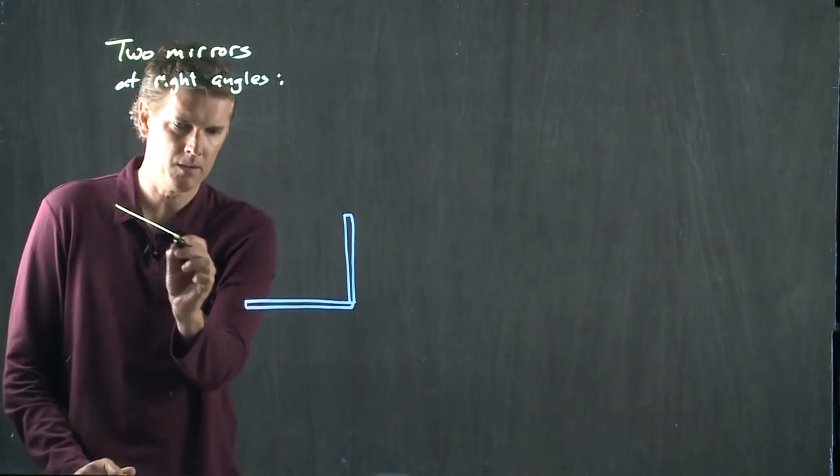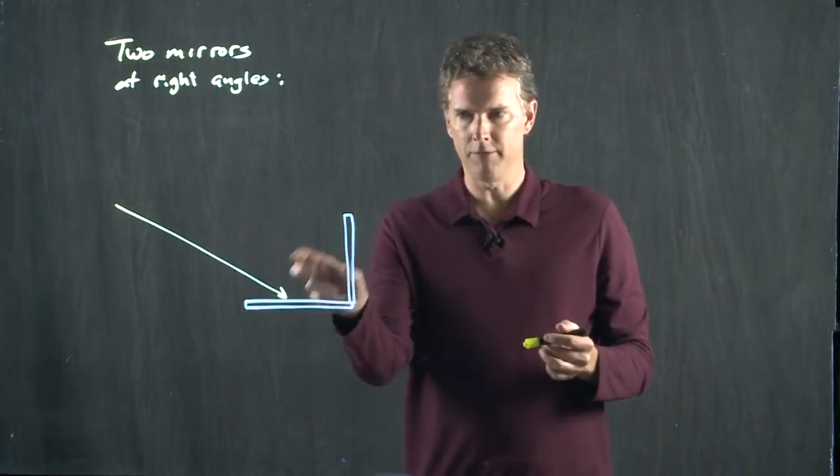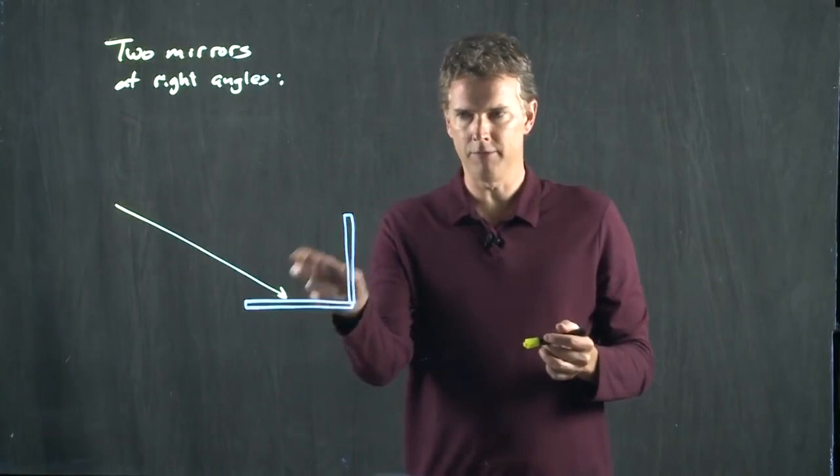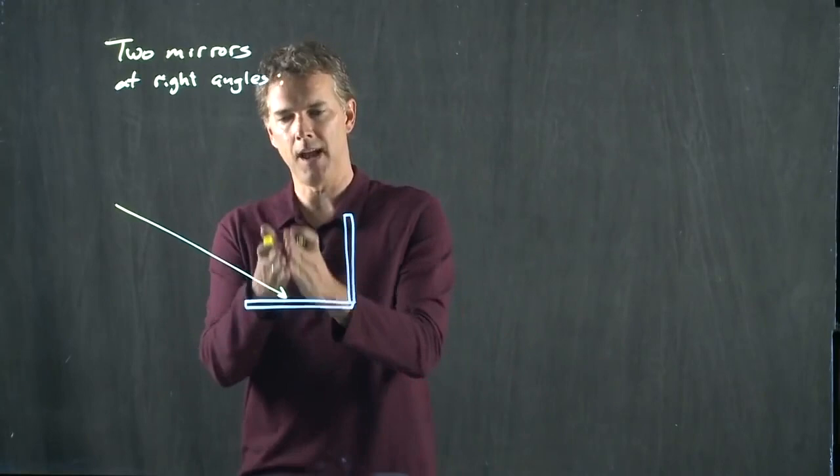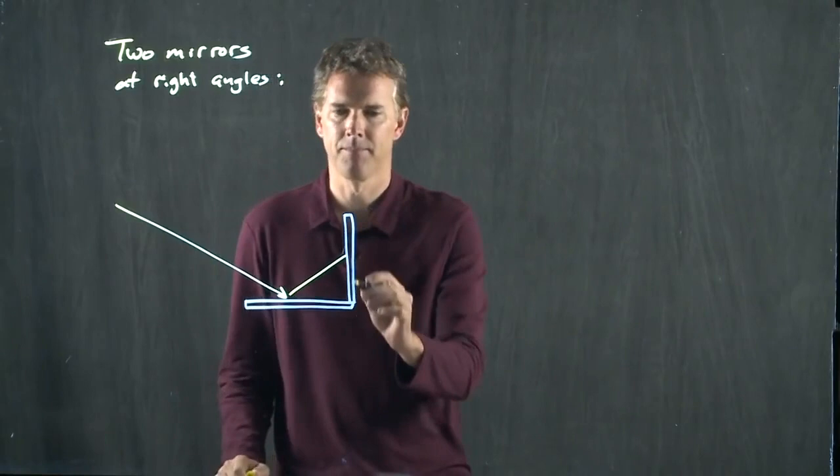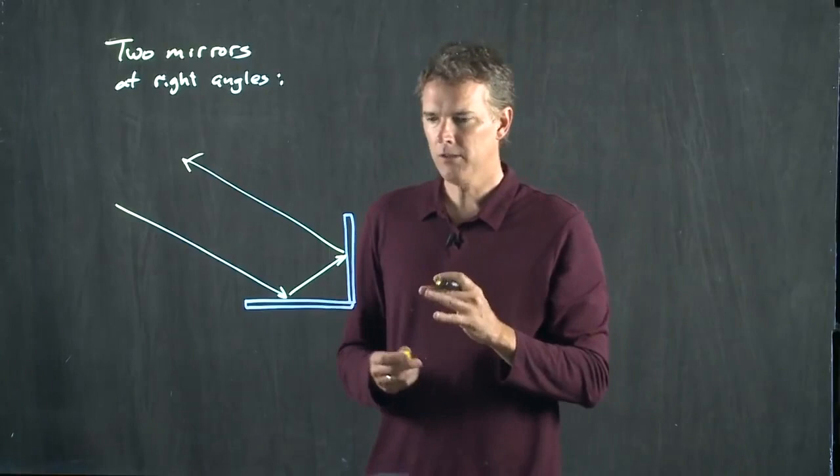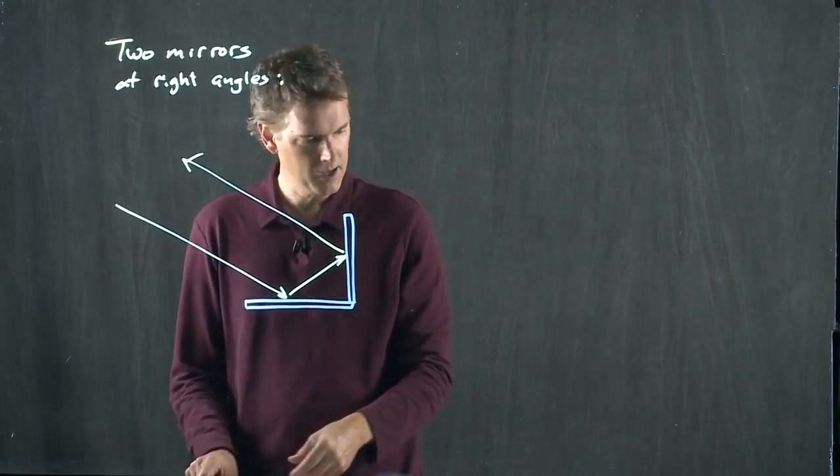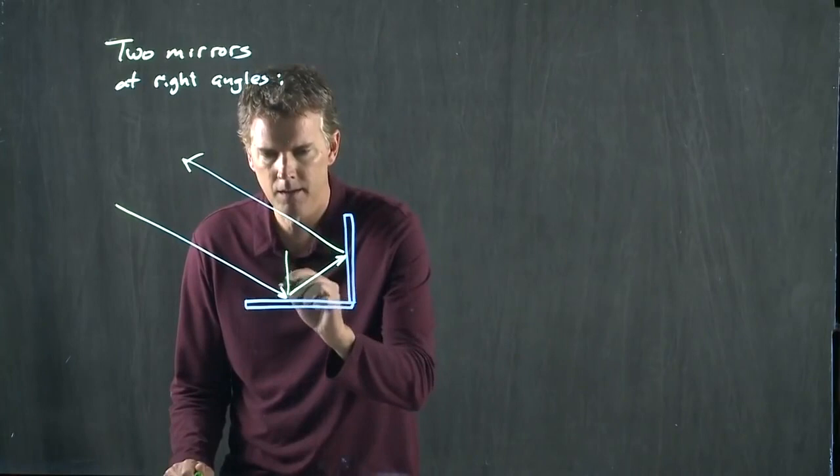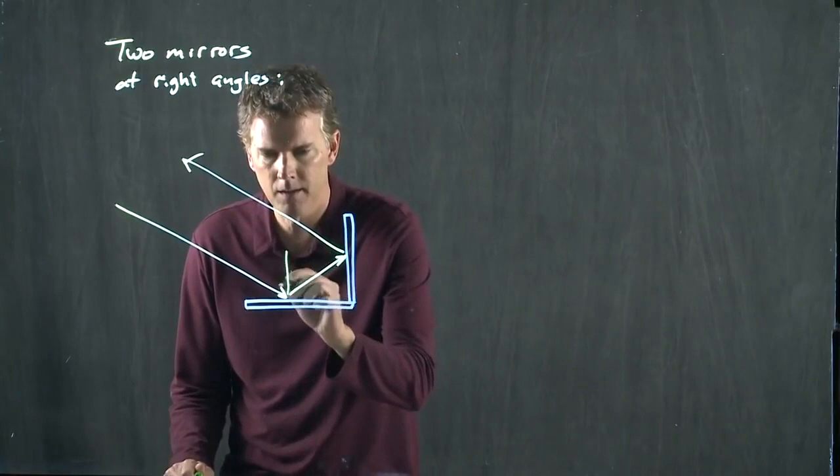What happens when a ray comes in? A ray comes in and it bounces off the first surface. We know that it bounces at the same as its incident angle, and so it's going to look something like that. When it bounces off the second mirror, it's going to bounce at an angle like so. And to make this really convenient, let's say that this angle is 45 degrees.